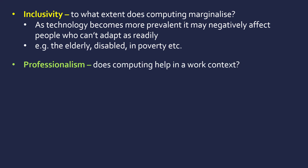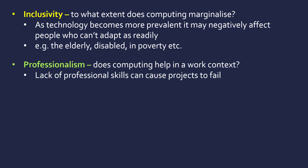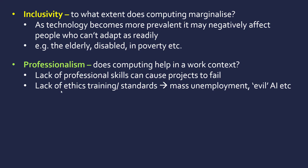Professionalism is another ethical area — does computing help in a work context and make people work more professionally? Lack of professional skills like communication and teamwork can cause projects to fail. There's often a module in a computer science degree just for professional skill development. A lack of ethical training or standards in the computer science community can lead to things spiralling out of control — like mass unemployment through computers taking over low-skilled jobs, or even malevolent AI. Things like plagiarism and theft of code are also examples.